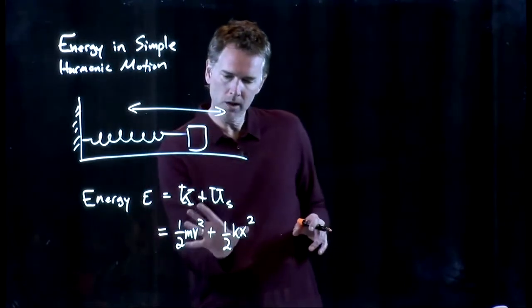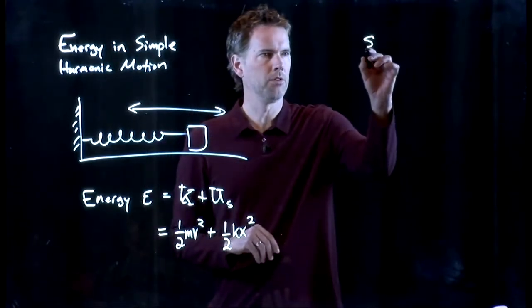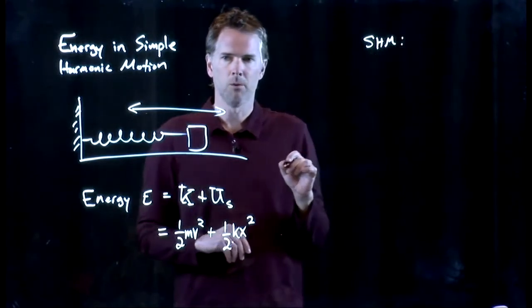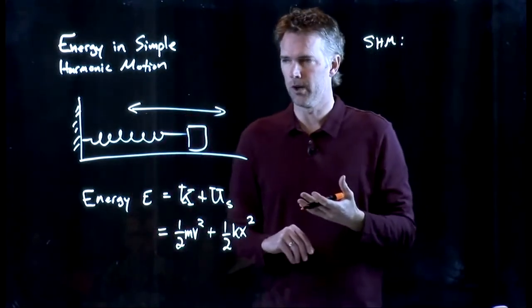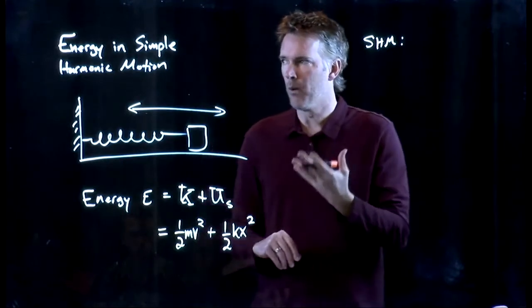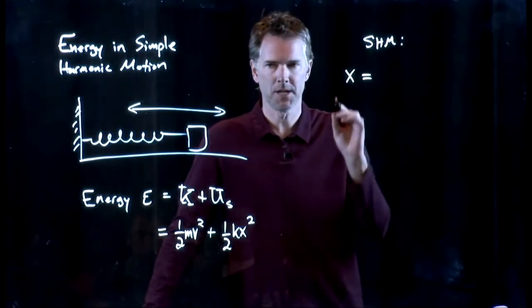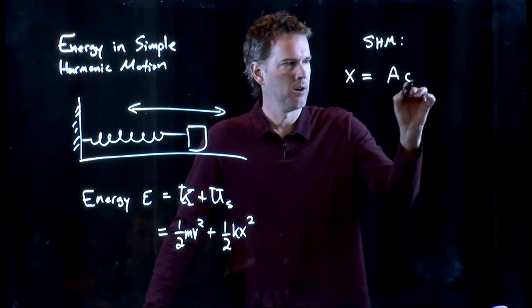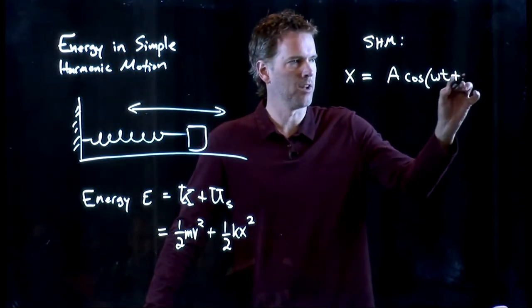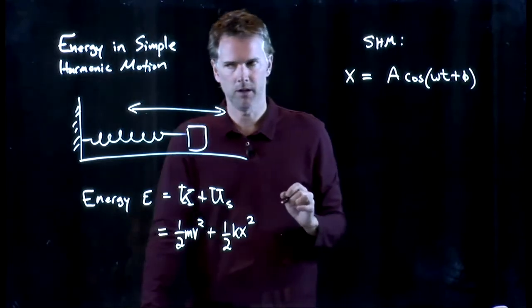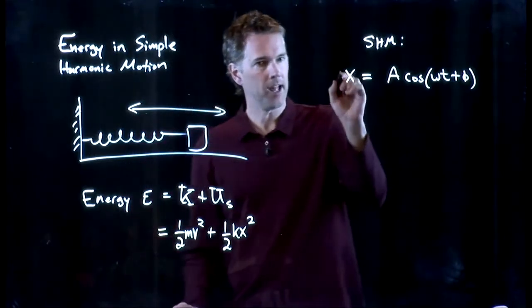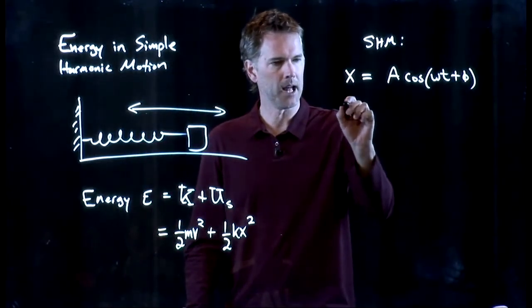That's good. But we know a little bit more about those for simple harmonic motion, right? We wrote down the differential equation for simple harmonic motion. And what we discovered was x has a particular solution. We can write it like this: A cosine omega t plus φ. And if that is x, then we can get v very easily by taking the derivative of x.